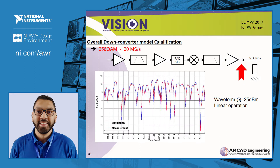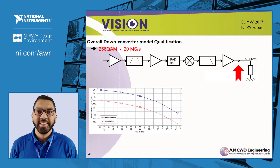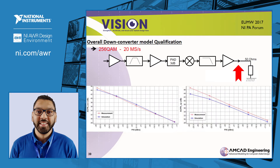Now we change the sample rate of the signal to 20 mega samples per second. Memory effects in the system start to be excited. The display of the waveforms shows good results at linear operation and at 1 dB gain compression. The comparison of the gain in the main channel shows an error less than 0.6 dB. The simulation results at the right and left ACPR are in agreement with the measurement at this sample rate.